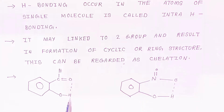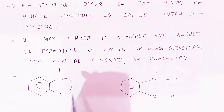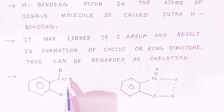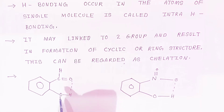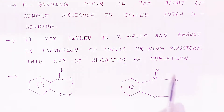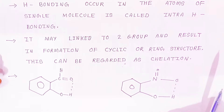This cyclic ring formation is also called chelation. Here you can see the dotted line — this is the electronegative atom and this is the hydrogen atom. The dotted line indicates the formation of a cyclic ring structure due to hydrogen bonding. Here the hydroxyl group hydrogen is involved and a ring structure forms, which is called chelation.